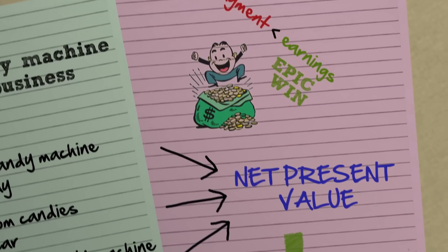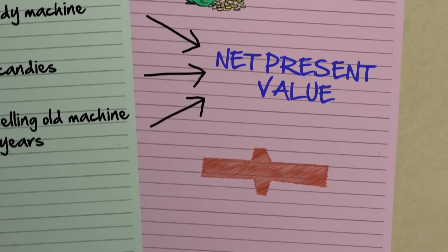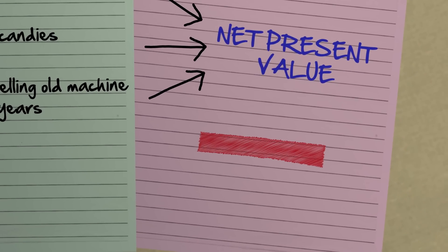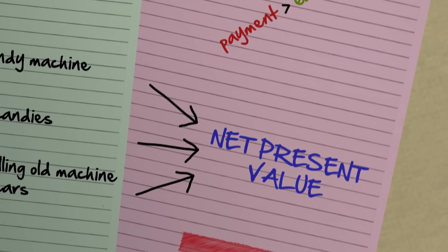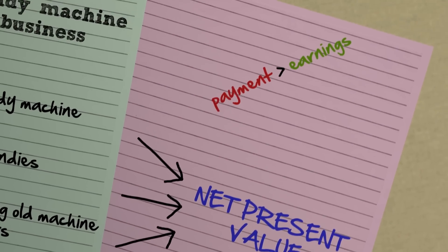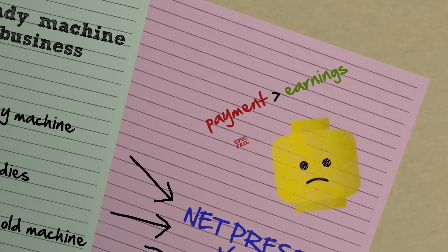But if the Net Present Value is negative, then it's a bad decision to do this candy machine business. It just means the Present Value of earnings is less than the Present Value of payments. So you lose.